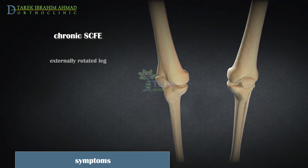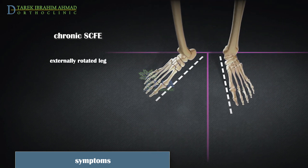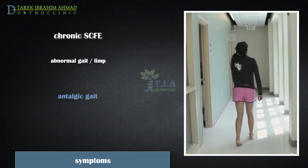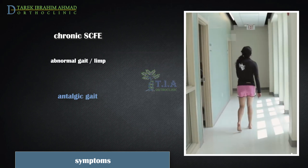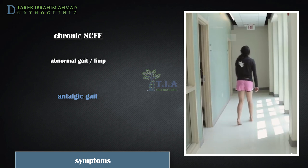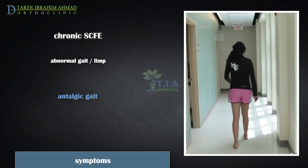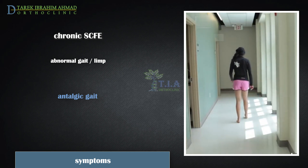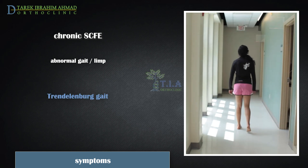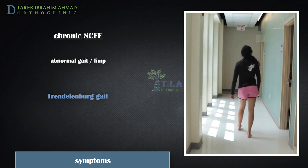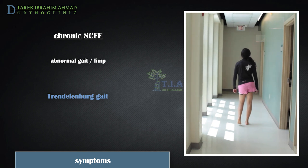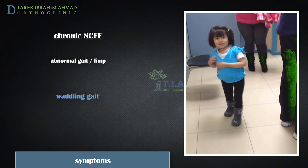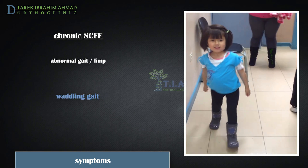The affected leg is usually held in an externally rotated position and may be shorter than the unaffected leg. The patient usually has an altered gait and may present a slight or mild limp. If the slip is unilateral, the gait may be antalgic — the patient takes a short step on the affected side to minimize weight-bearing. In moderate or severe unilateral slips, there may be a Trendelenburg gait, a shift of the torso over the affected hip. If the slip is bilateral, the gait is usually waddling.